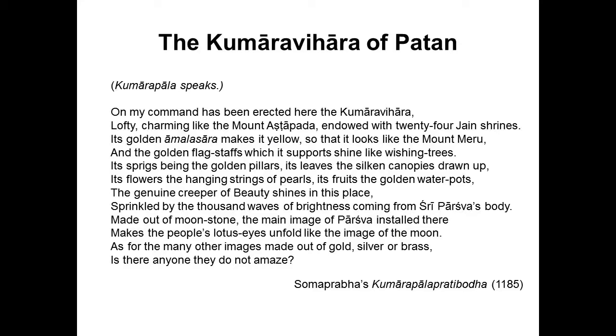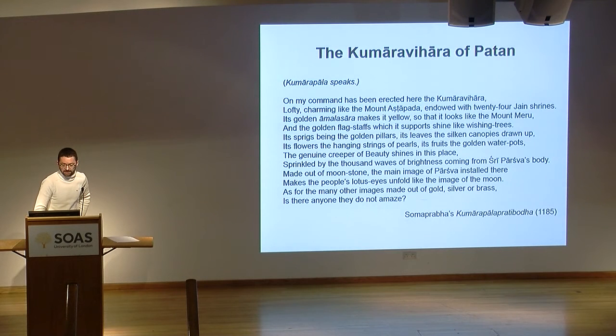Therefore, their texts abound in puns and variations on stereotype motifs which were supposed to enhance the beauty of the monuments. The way King Kumarapala himself depicts the great Kumaravihara of Patan in Soma Prabha's poem is highly representative of these embellishments. I quote: 'Has been erected here the Kumaravihara, lofty, charming like the Mount Ashtapada, endowed with 24 Jain shrines. Its golden Amalasara makes it yellow so that it looks like the Mount Meru, and the golden flagstaves which it supports shine like wishing trees.'